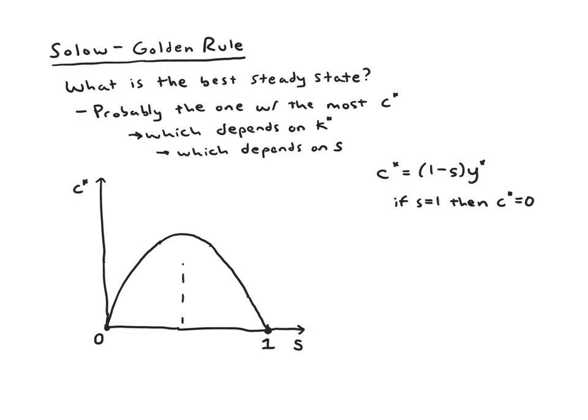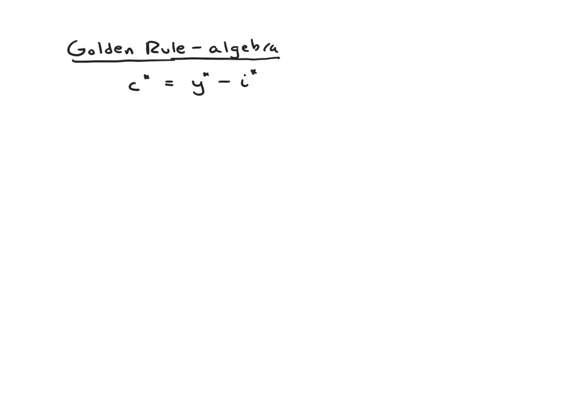And we call that savings rate that leads to this maximal amount of consumption, the Golden Rule Savings Rate, or SGR. So GR stands for Golden Rule. So let's now dig into this. Let's think about the algebra of how can we characterize this Golden Rule Savings Rate.